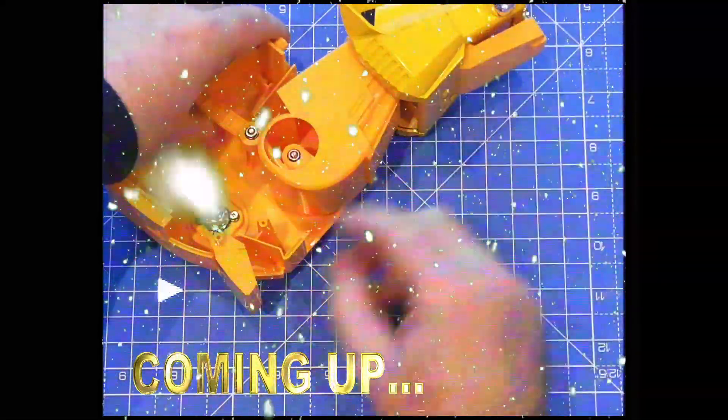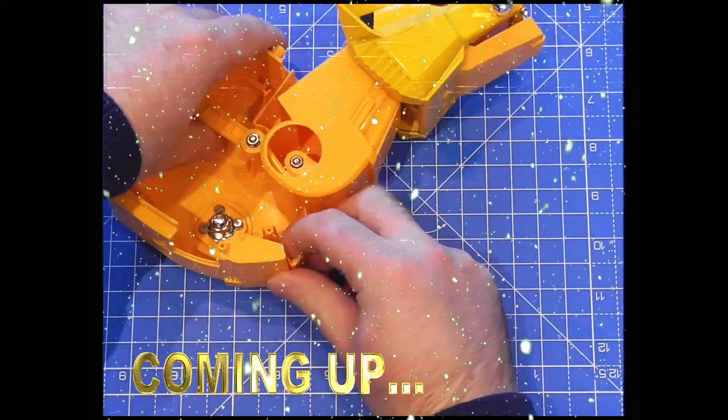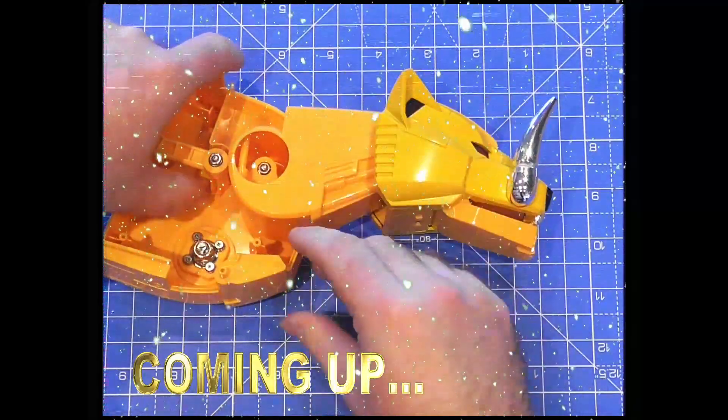So when it's in foot mode, this neck will come out and act as a protective heel so that the Megazord can stand up. And then we tuck it away when it is in Zord mode.